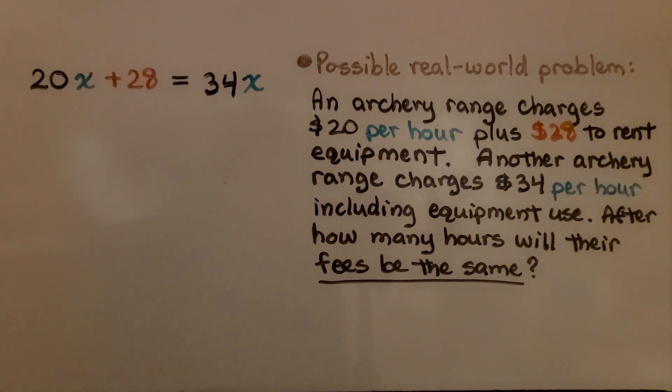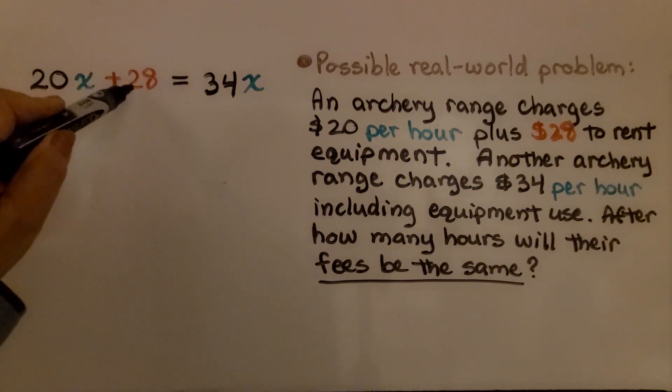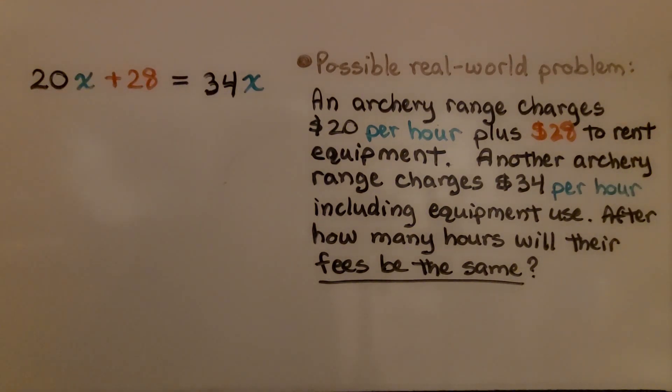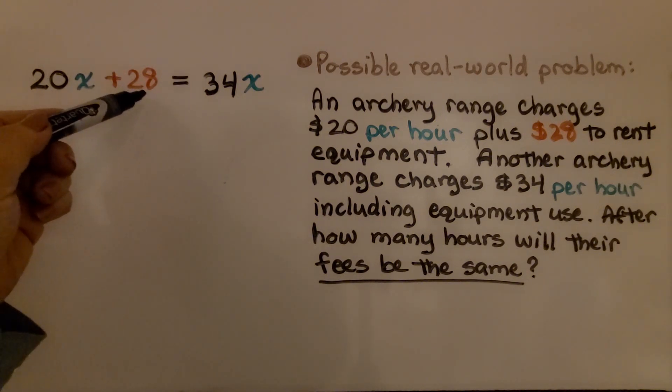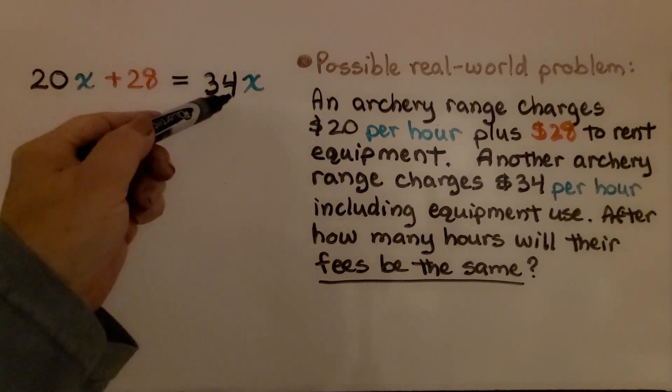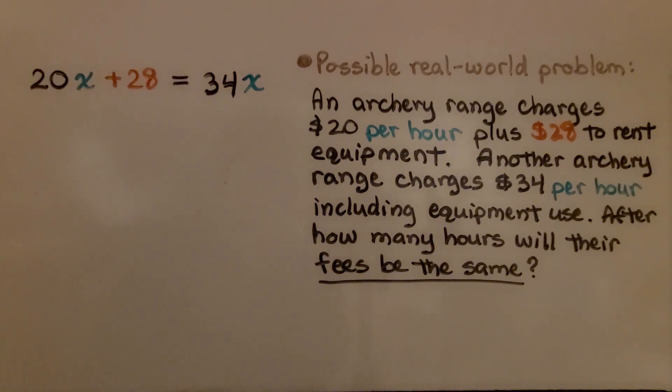Here's another example. We have 20x plus 28 is equal to 34x. The possible real-world problem that I came up with is an archery range charges $20 per hour plus $28 to rent the equipment. Another archery range charges $34 per hour, including equipment use. After how many hours will their fees be the same?